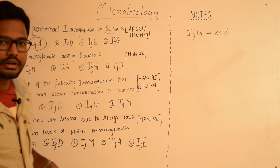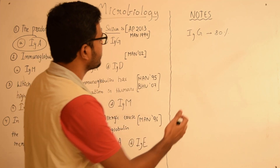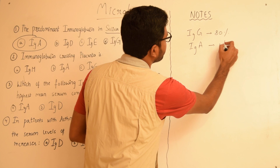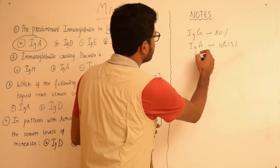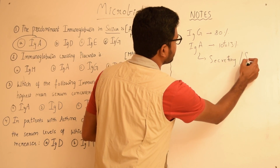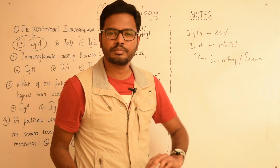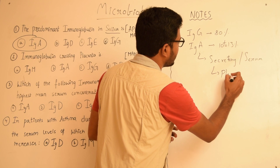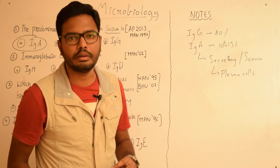IgA is the predominant immunoglobulin present in saliva. The concentration of IgA in serum is around 10 to 13% of all immunoglobulins. IgA exists in two forms: secretory IgA and serum IgA. Secretory IgA is produced by plasma cells lining the mucosal as well as glandular epithelium.